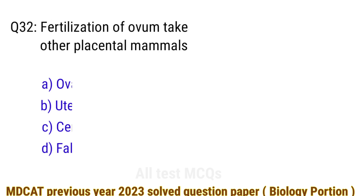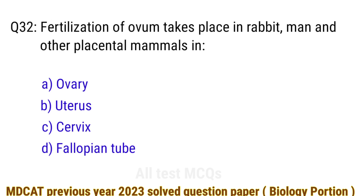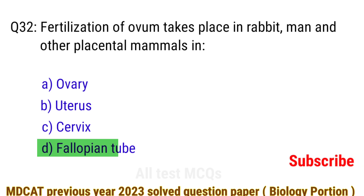Question number 32. Fertilization in rabbits and other placental mammals takes place in? The right answer is option D: the fallopian tube.